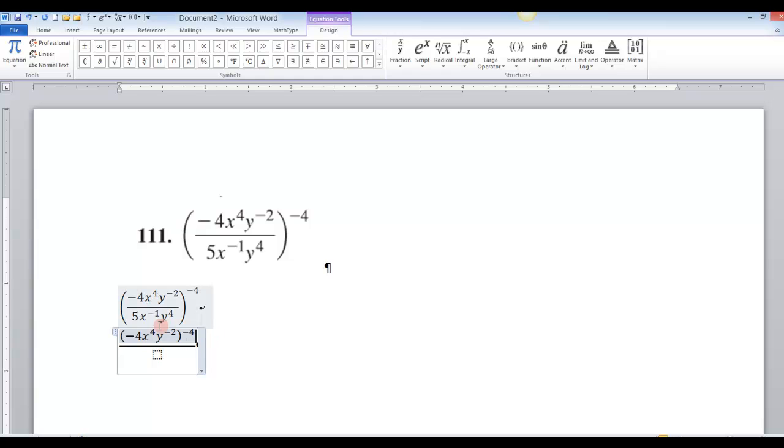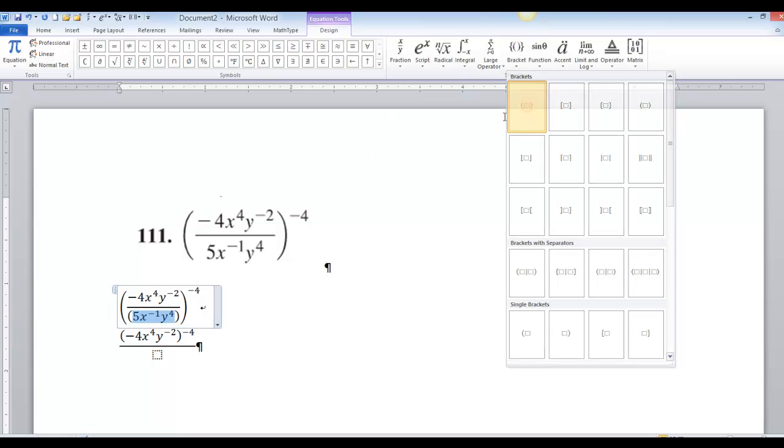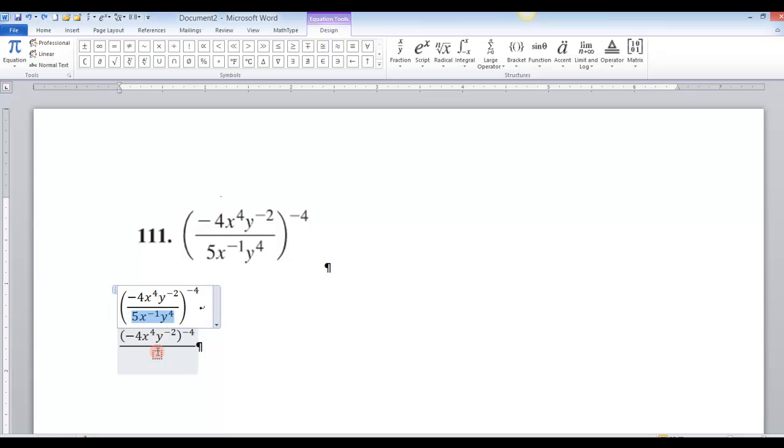And then do the same thing down here as well. Oops, that wasn't what I wanted. So let me hit a control Z there. I wanted to copy that. I wanted my parenthesis down here. And I wanted to raise all that to the negative 4. And then I could go on to the next step.